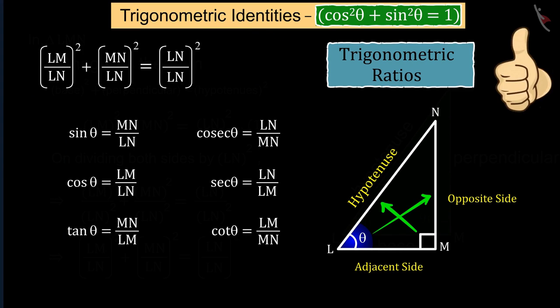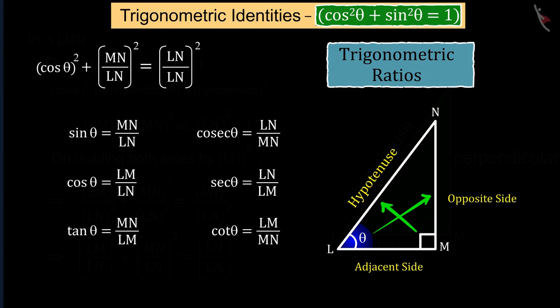Well done! With the help of theta angle, we can tell that the first term on the left side is the Trigonometric Ratio of the square of cos theta and the second term is the square of sin theta, while the right side is equal to 1.